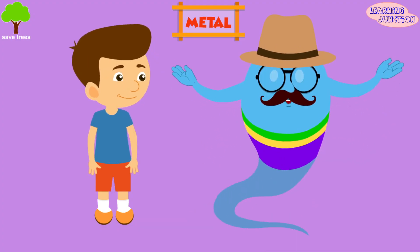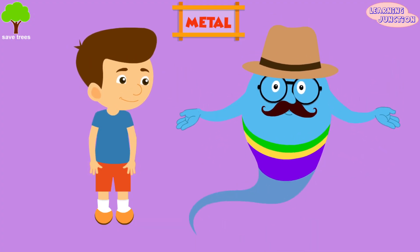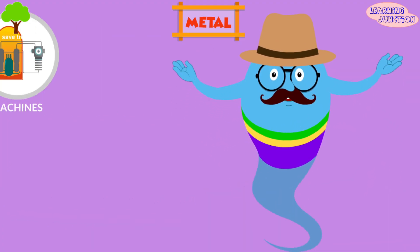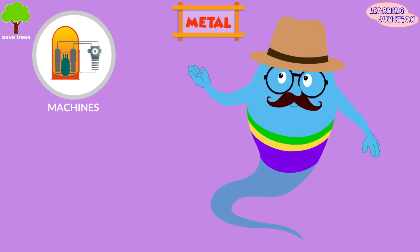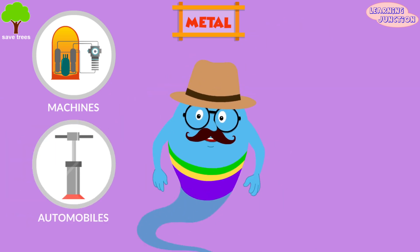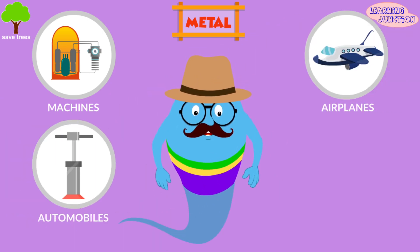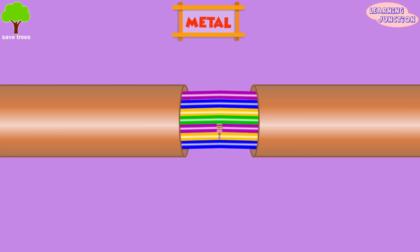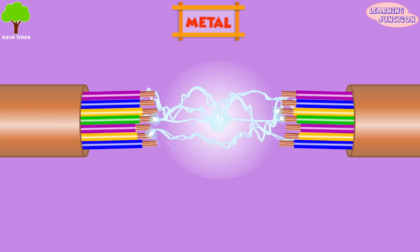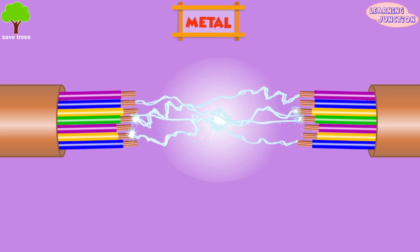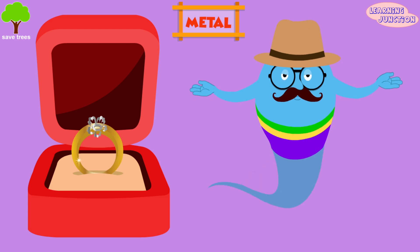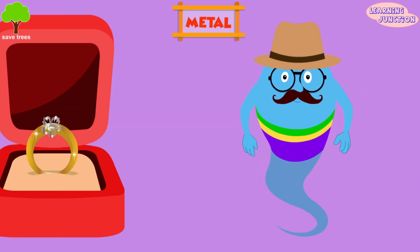Let's see some uses of metals. Metals are generally used in building machines, automobiles, airplanes, and cars, etc. Some metals like copper are used in making wires. Silver and gold are used for making ornaments.